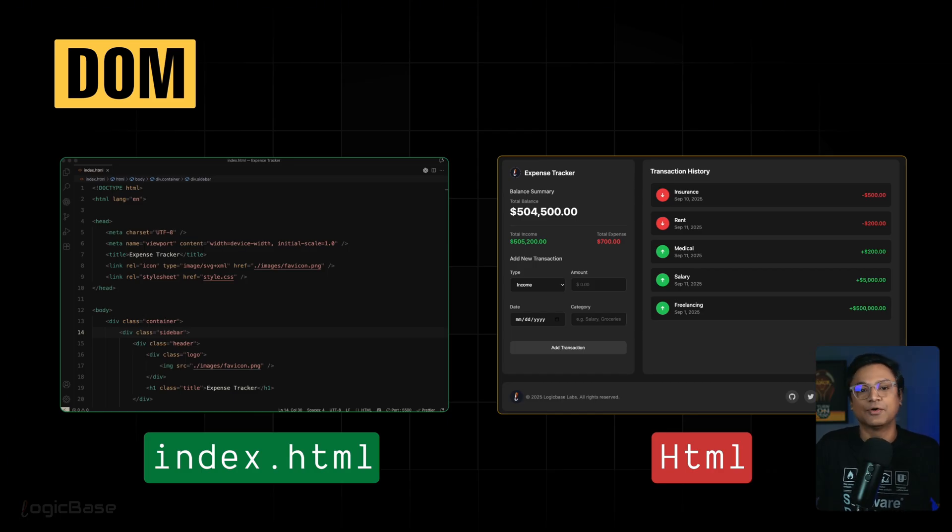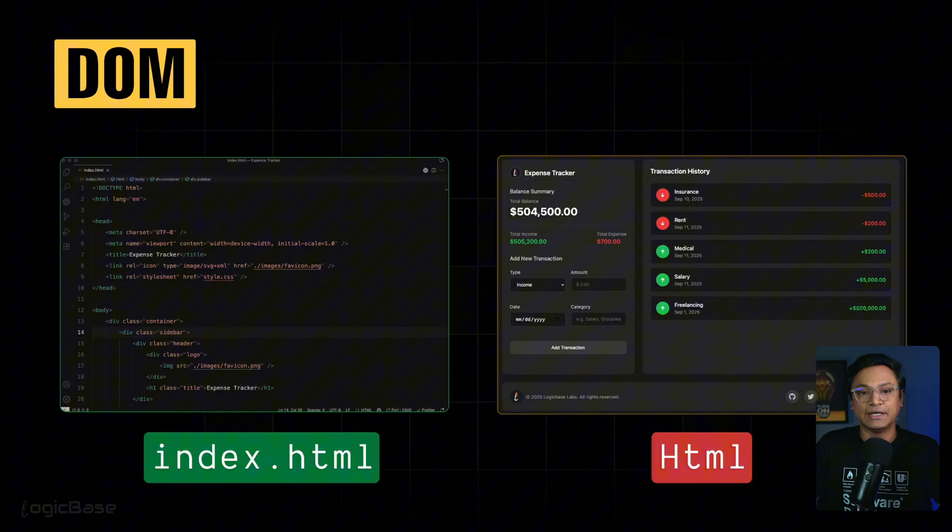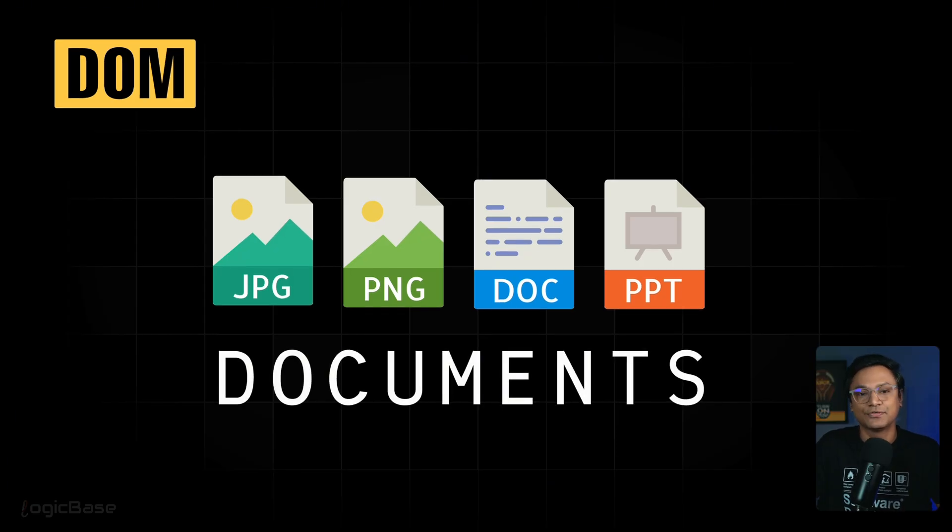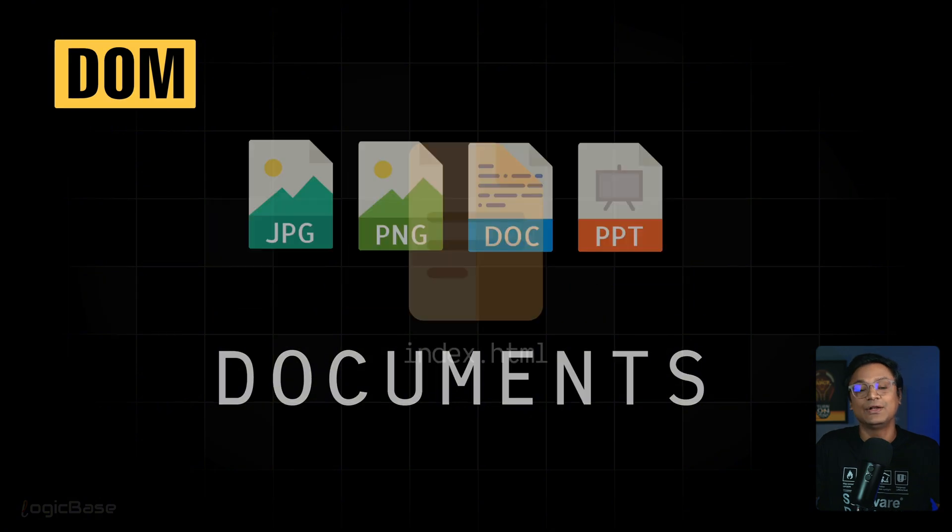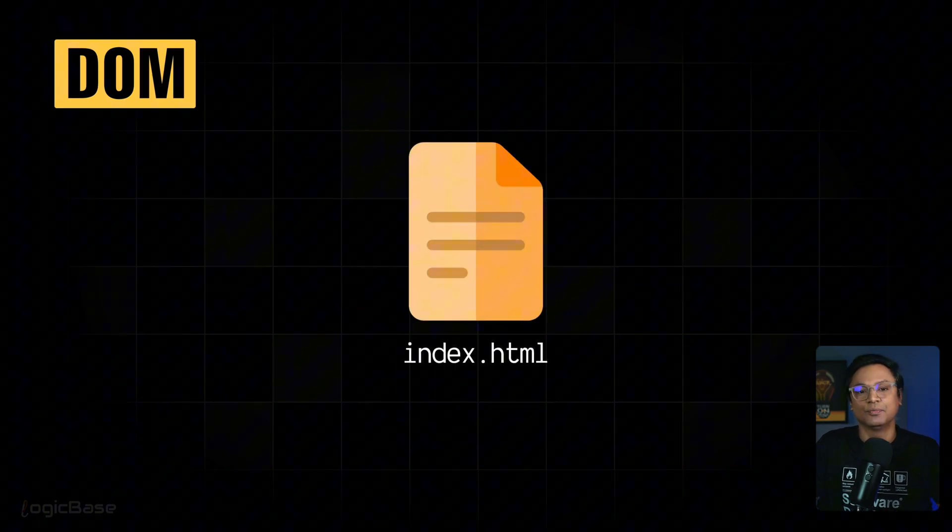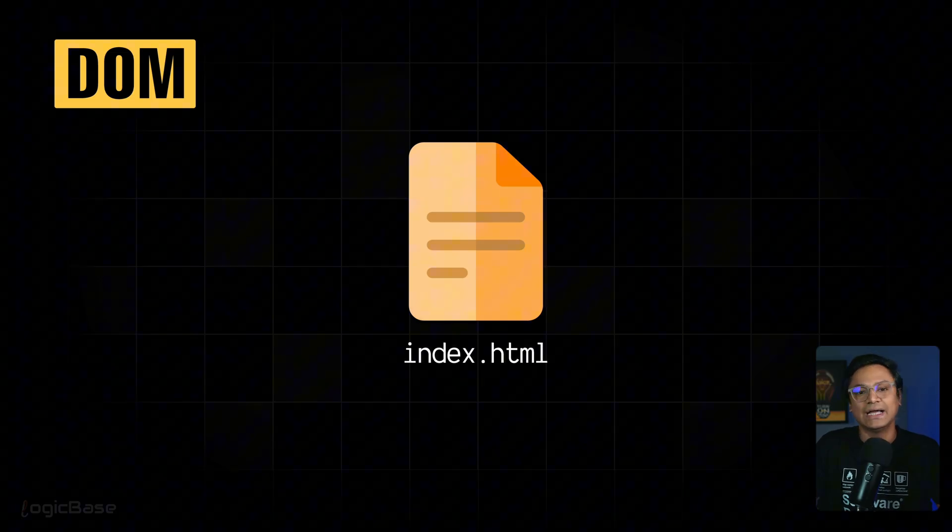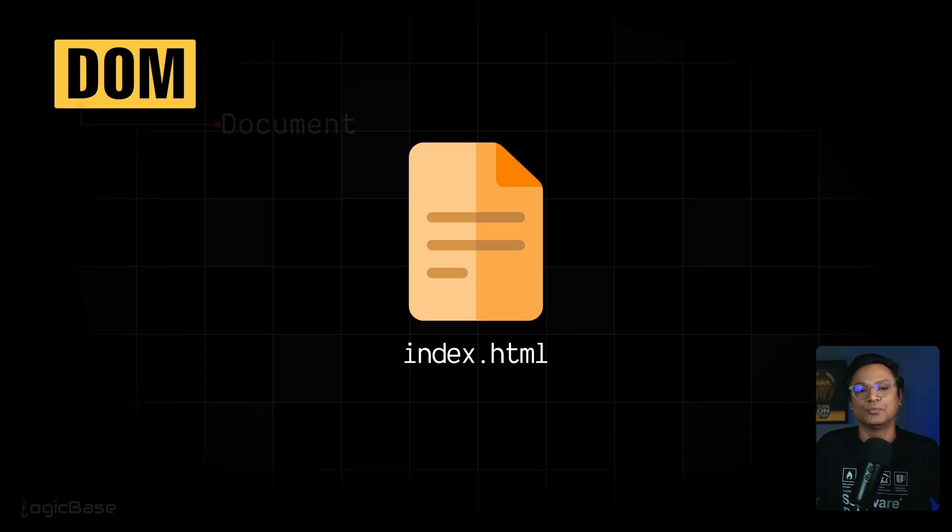In the same way, in our file system, an image like a JPG or PNG or a Microsoft Word or PowerPoint file, these all exist as separate files. We often call them documents too, like a Microsoft Word document file or an image document file. The index.html file on our computer is also just another document in our file system.